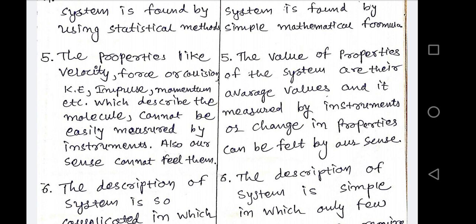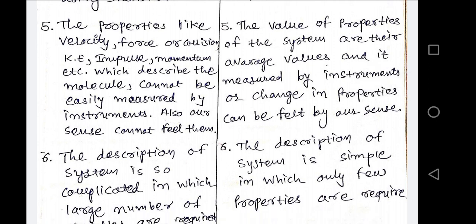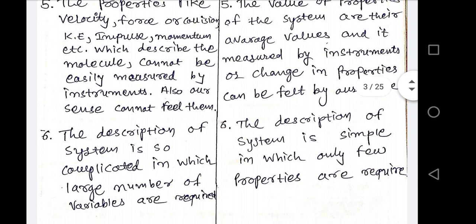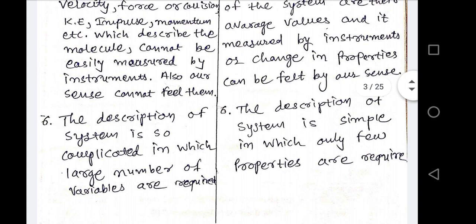In the macroscopic point of view, the values of properties of the system are their average values and are measured by instrument, or the change in the property can be felt by our senses. The description of the system from the microscopic point of view is very complicated, requiring a large number of variables. From the macroscopic point of view, the description of the system is simple, requiring only a few properties.